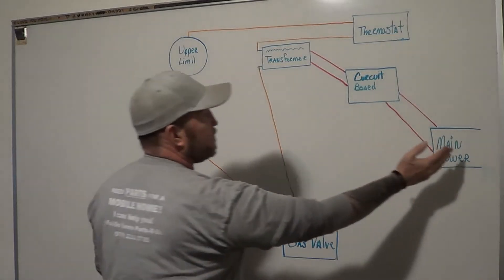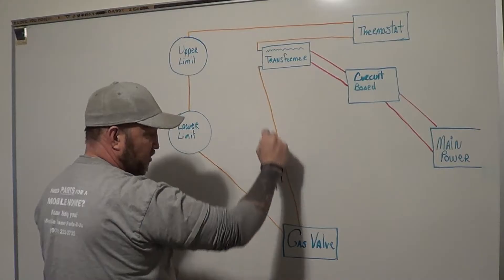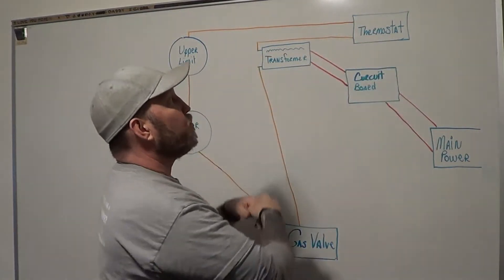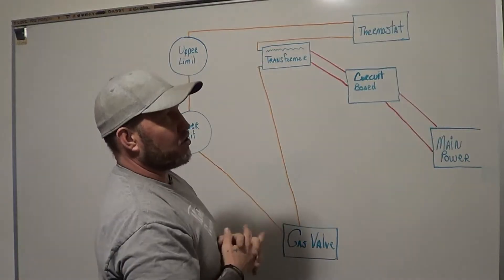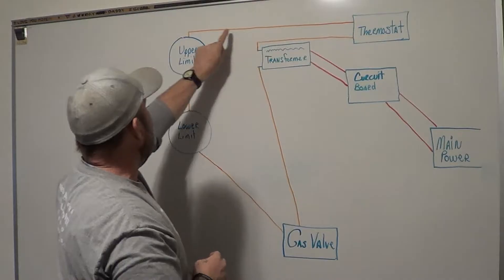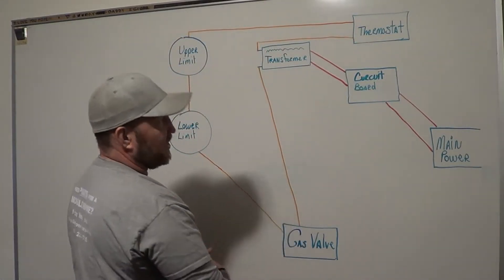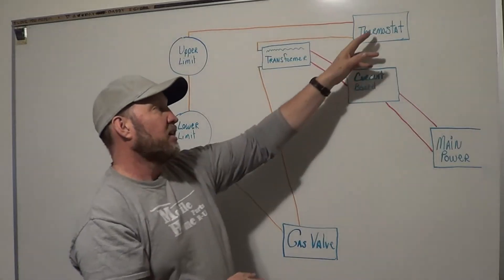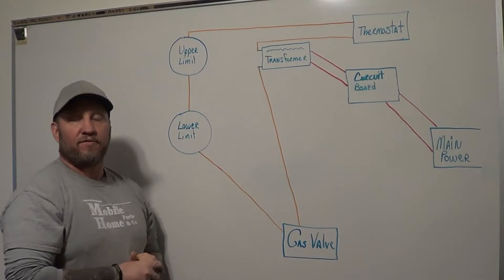The main power goes to the circuit board, which goes to the transformer. One side of that transformer goes down to the gas valve. The other side goes to the thermostat, which is the only open circuit part. When the thermostat calls for heat, it closes that circuit and sends power through the limit switches — which always have continuity — into the gas valve, giving you ignition. Once the house cools down, the thermostat opens again, stops flow through the system, and the gas goes off.